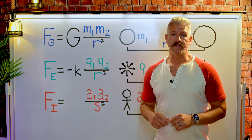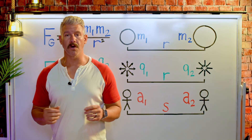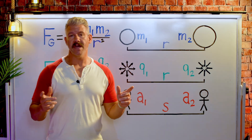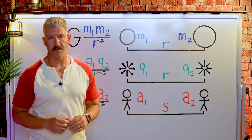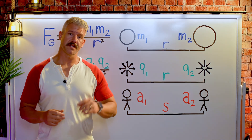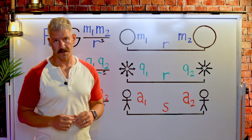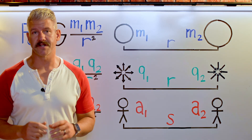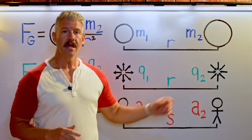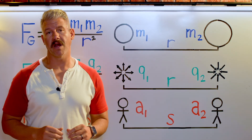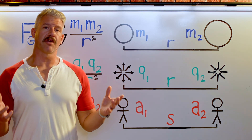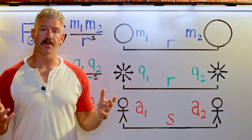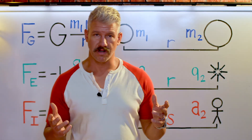In 1785, Coulomb conducted a series of experiments using a torsion balance to measure the force between charged objects. Although many scientists confirmed the inverse square law relationship experimentally, Coulomb was the first to publicly enunciate his results. Coulomb discovered that the force between two point charges is directly proportional to the product of their charges and inversely proportional to the square of the distance between them.